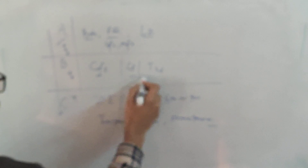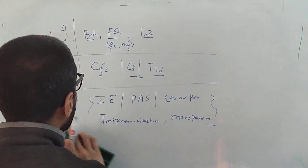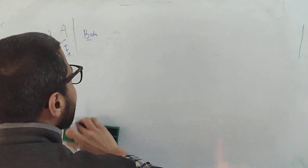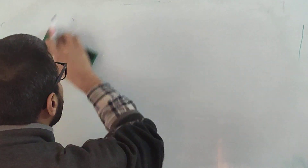Group A drugs — bedaquiline, fluoroquinolone, linezolid — are the most effective, then Group B: clofazimine, cycloserine, terizodone. If a patient is resistant to any of these drugs, then we choose drugs from Group C. These are the different categories of drugs divided into A, B, and C.